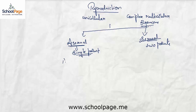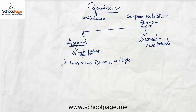Asexual reproduction can be further classified into different types. The first is fission, where an organism splits to produce a new organism. Fission is of two types: binary fission, where a single organism splits into two giving rise to two organisms, and multiple fission, where a single organism splits into a large number giving rise to multiple offspring.